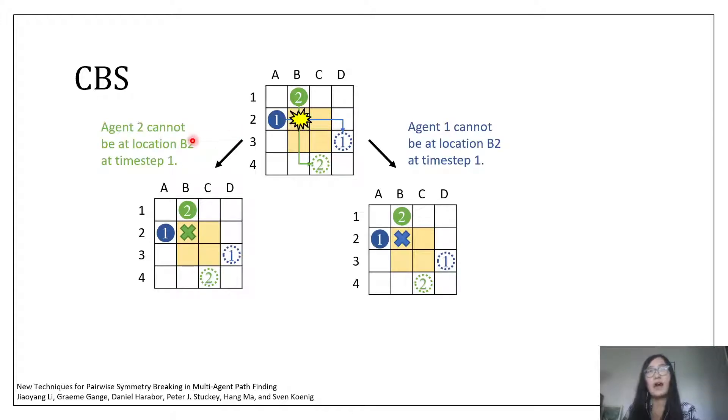To resolve this collision, CBS says that either agent 2 cannot be at location B2 at time step 1, or agent 1 cannot be at location B2 at time step 1. In each case, it replans new paths to satisfy the new constraints. Like here, we plan for agent 2, and here we plan for agent 1, and then check for collisions again. If there are still collisions, we branch on these collisions again and repeat this procedure until we find collision-free paths.